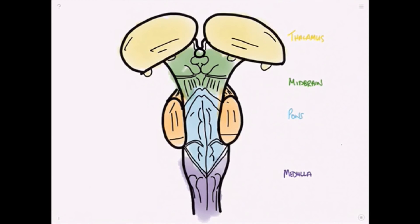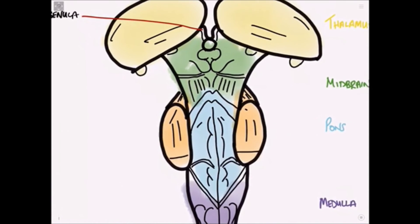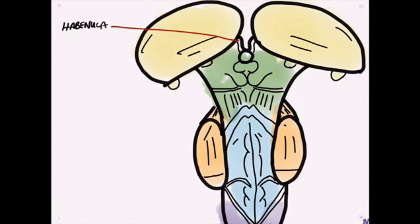The first thing I want to label up here is the habenula and we'll maybe just zoom in here and have a look closer. This is the pineal body and beneath that we have the superior colliculus. Beneath the superior colliculus funnily enough is the inferior colliculus.